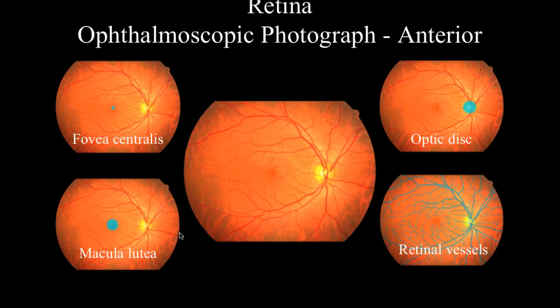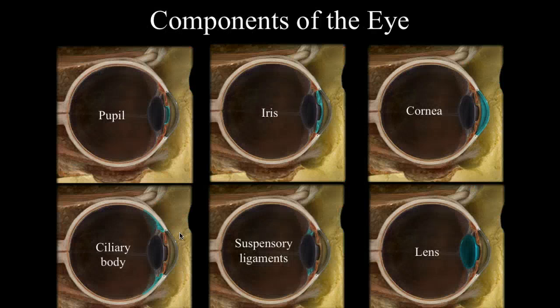Looking at the retina and components of the eye, you can see the pupil, iris, cornea, ciliary body, suspensory ligaments, and the lens.